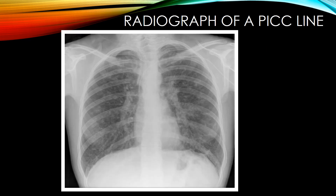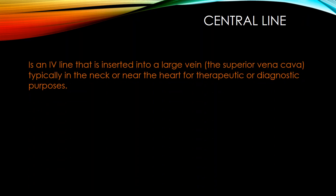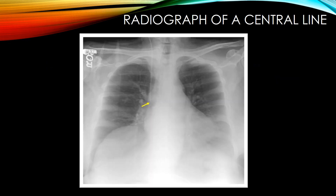Here is a radiograph of a PICC line — as you can see, it's coming down almost just to the SVC. A central line is an IV line inserted into a large vein, the superior vena cava, typically in the neck or near the heart for therapeutic and diagnostic purposes, to administer medicines and fluids — the arrow is pointing to the tip of the central line.